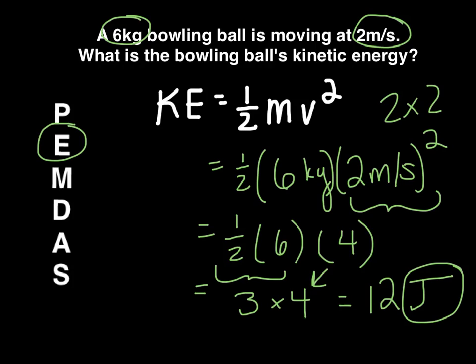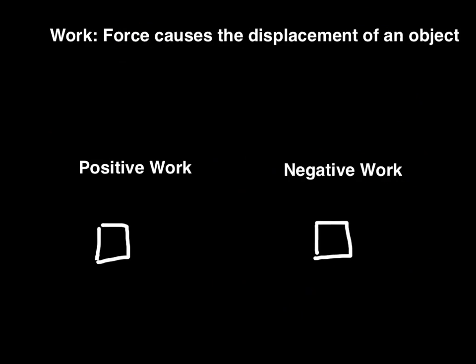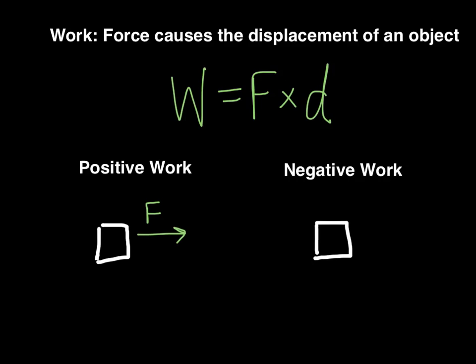Hopefully this looks familiar, because joules are the exact same units we use for work. Now that we know how to calculate kinetic energy, we can figure out how it relates to work. Remember, work is when a force causes the displacement of an object, and the equation is work equals force times displacement. Positive work is when the force acting on an object is in the same direction as the object is moving, and in that case the object speeds up.